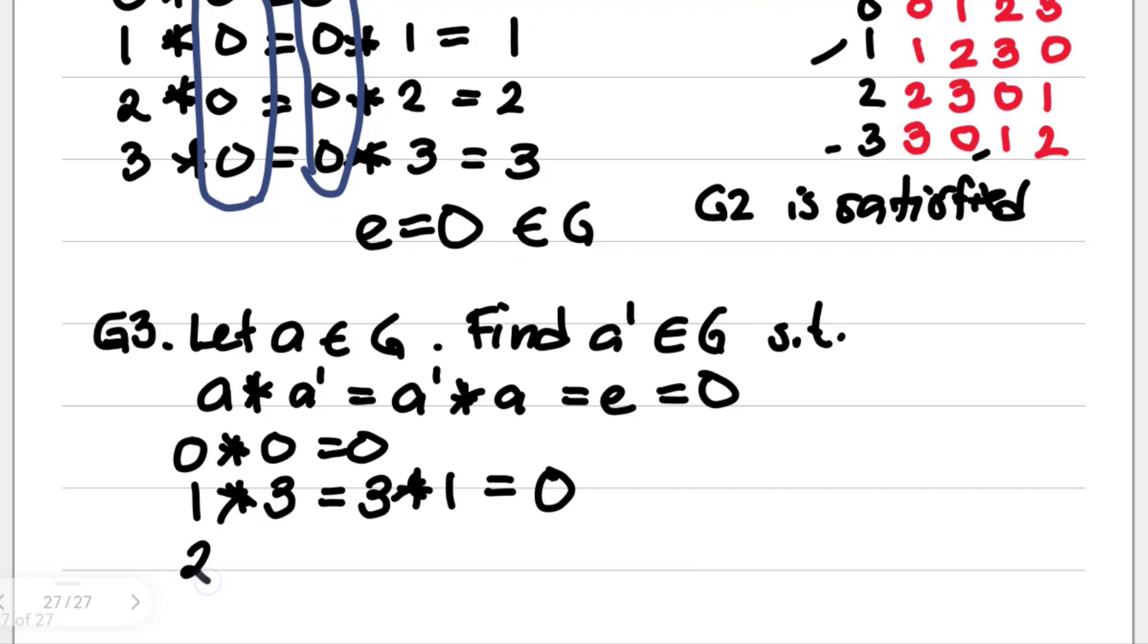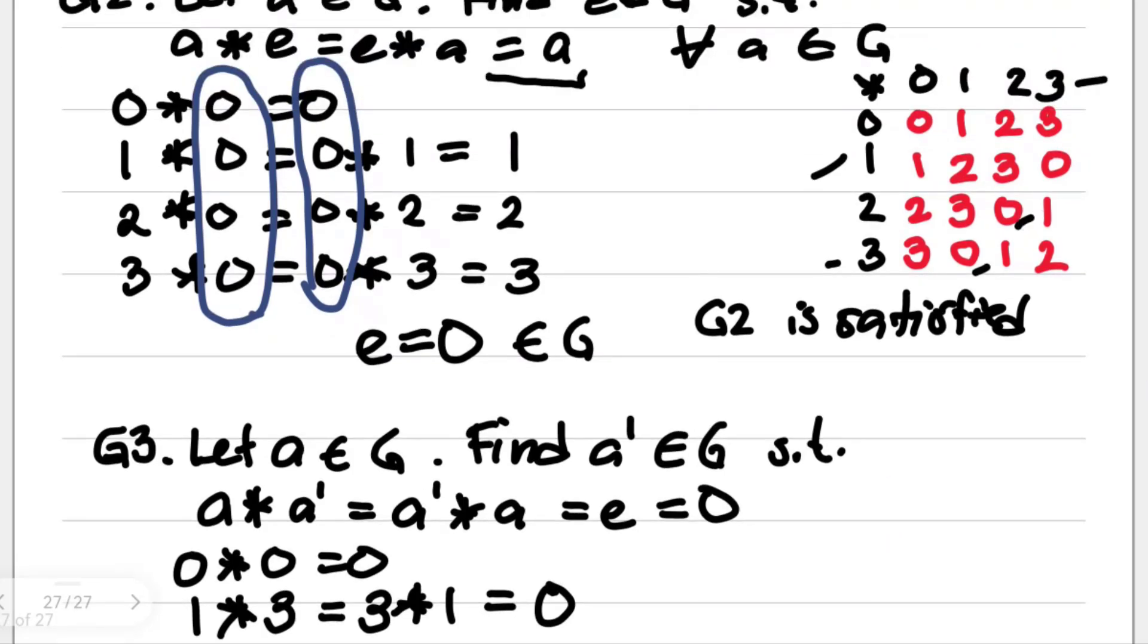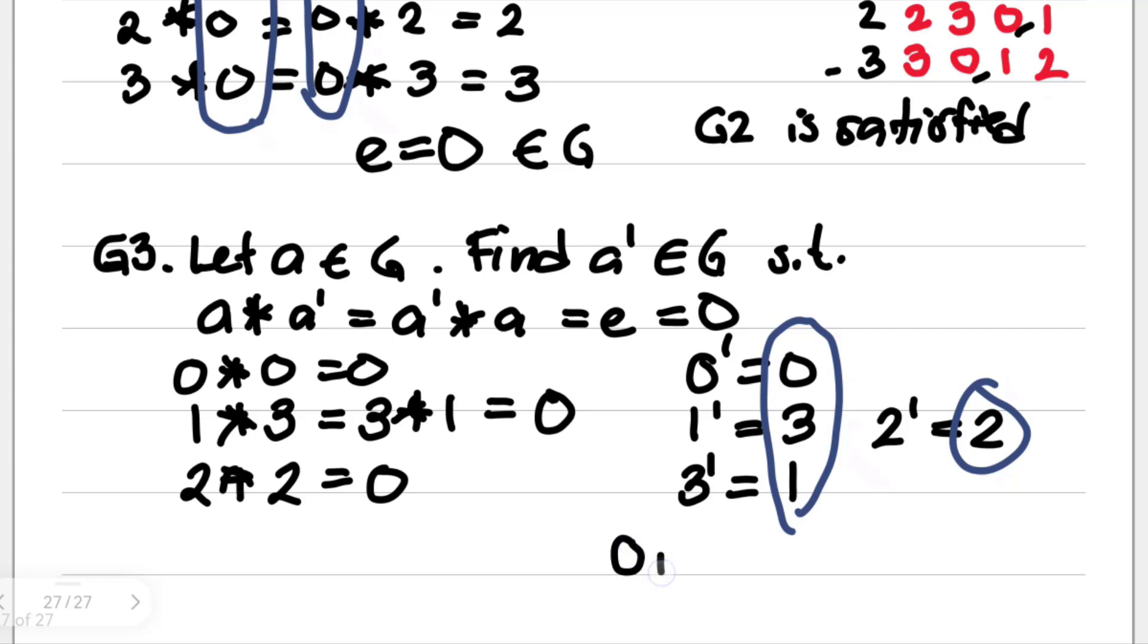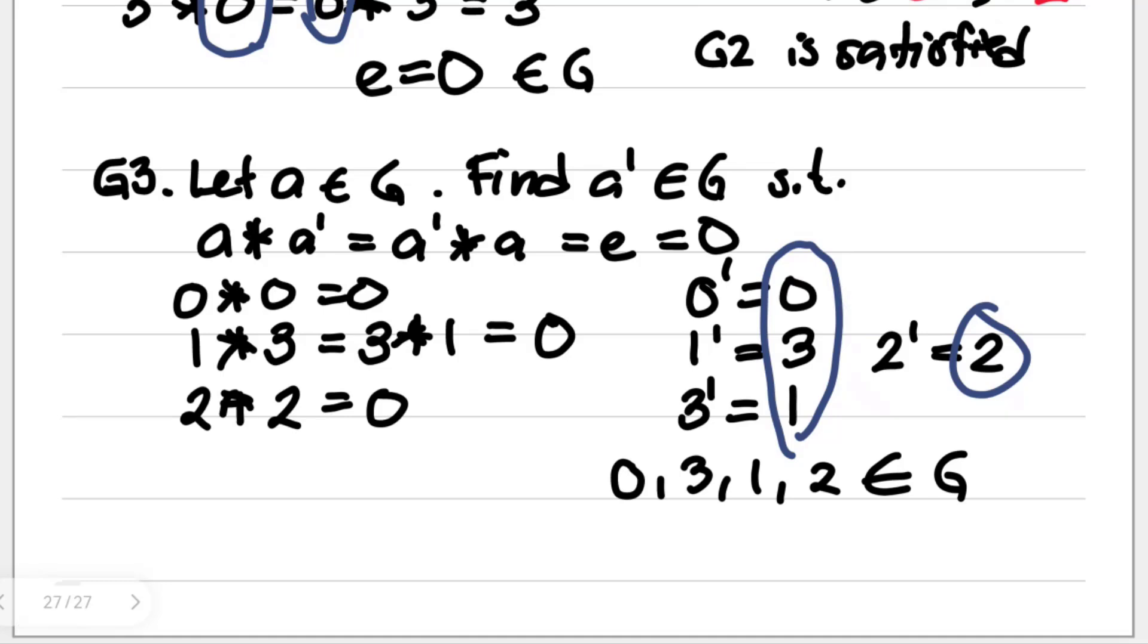So 1 star 3 is equal to 3 star 1 equal to 0. So for 2 star 2 is equal to 0. So for all of this in mind, we can say that the inverse of 0 is 0. The inverse of 1 is 3. The inverse of 3 is 1. The inverse of 2 is 2 itself. And all of this results, we have here 0, 3, 1, and 2. They're all elements of G. This means that for all elements in A, their inverses are also elements of the same set. This means G3 is also satisfied.